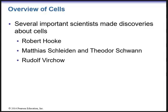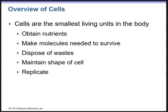Basically, people believed living things just spontaneously generated, but we know that is not true. Virchow's theory that cells come from other cells still holds true today. Cells are the smallest living units in the body. We know that cells can obtain nutrients, make molecules needed to survive, dispose of wastes, maintain their shape, as well as replicate and make more cells.